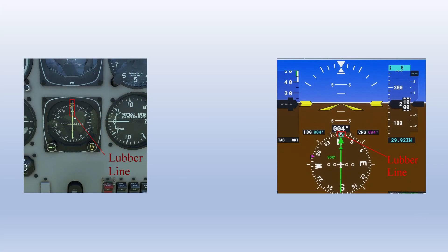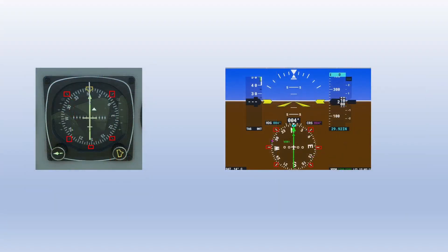Most HSIs have what's called a lubber line at the top of the instrument to make it easier to see what your current heading is, though on EFIS instruments it usually looks more like an arrow than a line. Most HSIs also have stationary markings at 45 degrees left and right of the nose and tail, and sometimes on the wings and tail, to help with things like pattern headings, instrument procedure turns, and reciprocals.